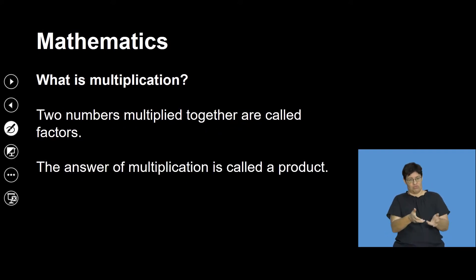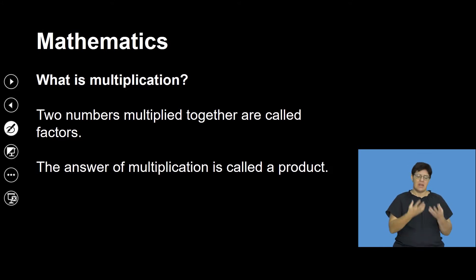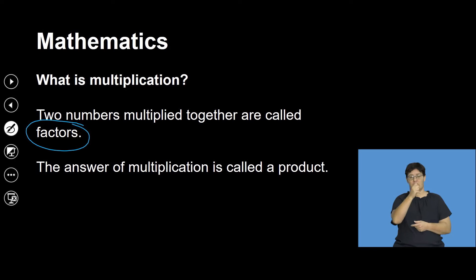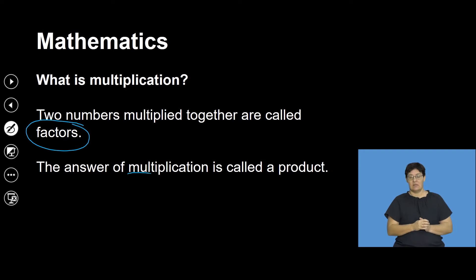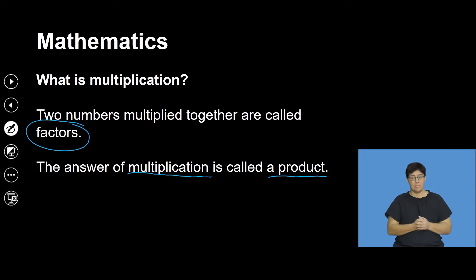Two numbers multiplied together we call factors, because we really do need to get our language clear in what we are talking about. And the answer we get when we multiply is called the product.